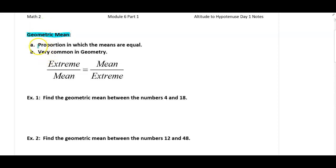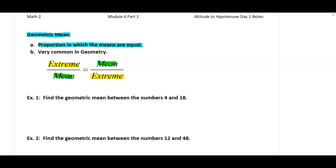A geometric mean is basically when you have a proportion in which the means are equal. A proportion is made up of two ratios that are set equal to each other. One set of cross-products are known as the extremes, the other cross-products are known as the means. Any time you have a proportion where one of the cross-products are the same, we say that's a geometric mean.